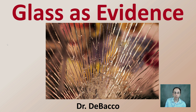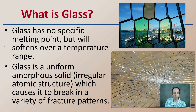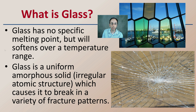Welcome to another DeBacco University video. Here we're looking at glass as evidence involved with crime scenes. First off, what is glass? We need to define what that is. Whilst glass may not have a specific melting point, it will soften over a temperature range, and that can be important where arson or high heat might be involved with a particular crime scene.